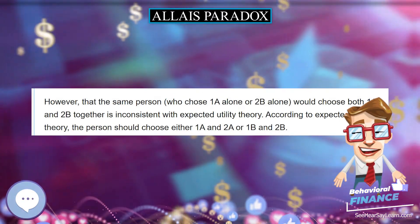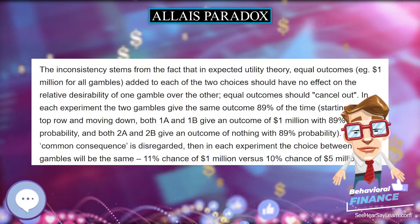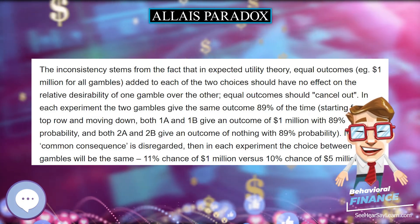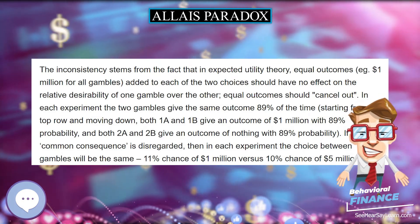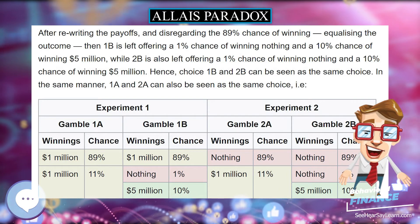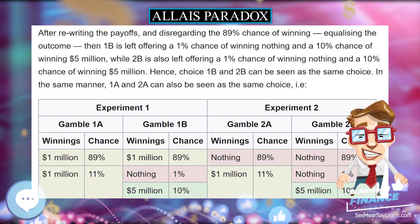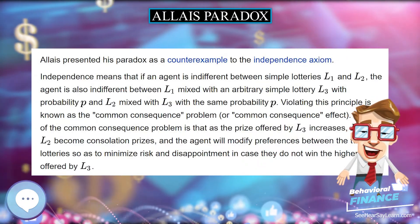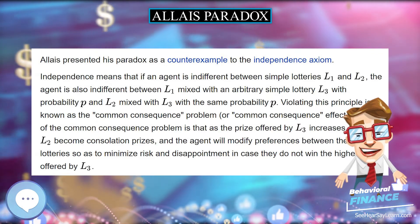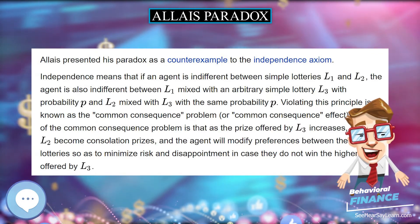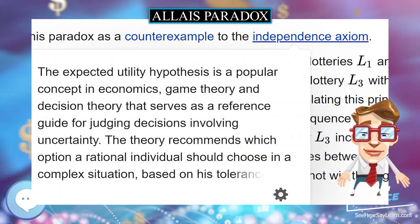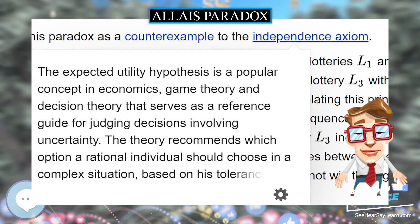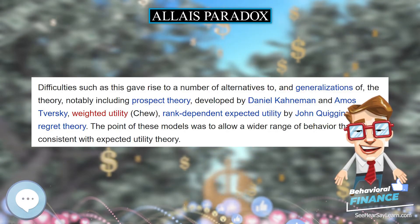The main point Allais wished to make is that the independence axiom of expected utility theory may not be a valid axiom. The independence axiom states that two identical outcomes within a gamble should be treated as irrelevant to the analysis of the gamble as a whole. However, this overlooks the notion of complementarities — the fact that your choice in one part of a gamble may depend on the possible outcome in the other part of the gamble.